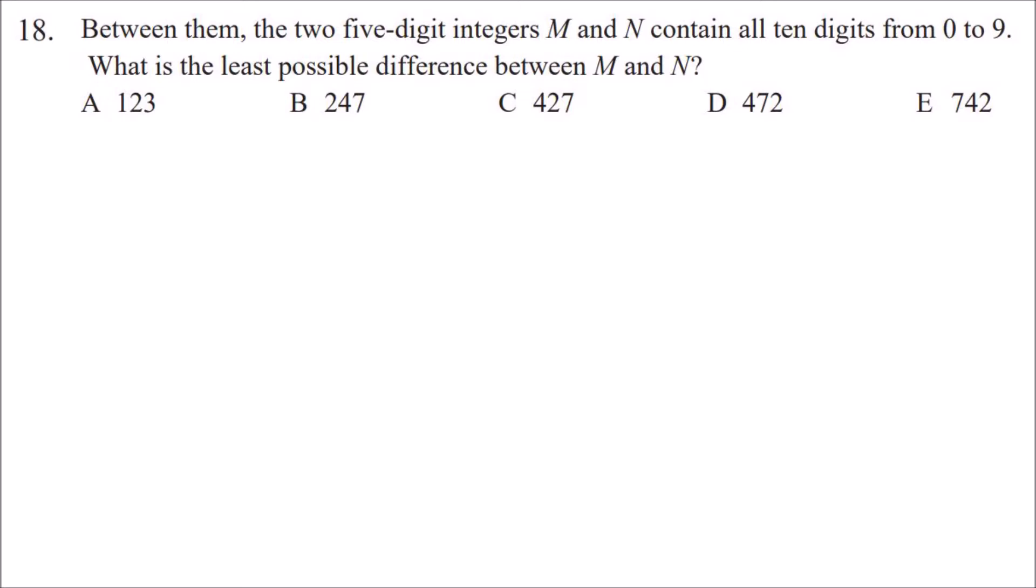To solve this question we need the two integers M and N to be the closest possible to each other. That means that we want the first digits of the two integers to be as close as possible so they would have a difference of one.